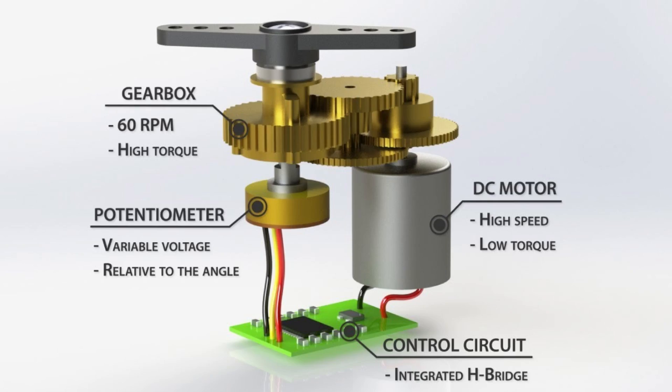If you have a DC servo motor, it has three or four main parts. It is based on a normal DC motor. There is also a gearbox arrangement. A normal DC motor has low torque and high speed, but with a gearbox system, we can adjust the speed, RPM, and torque.